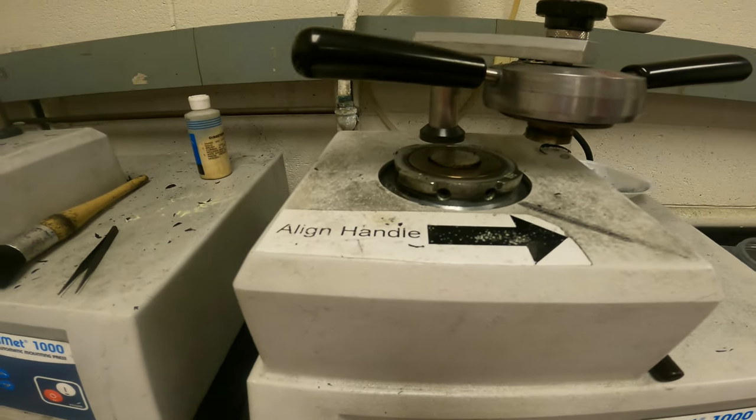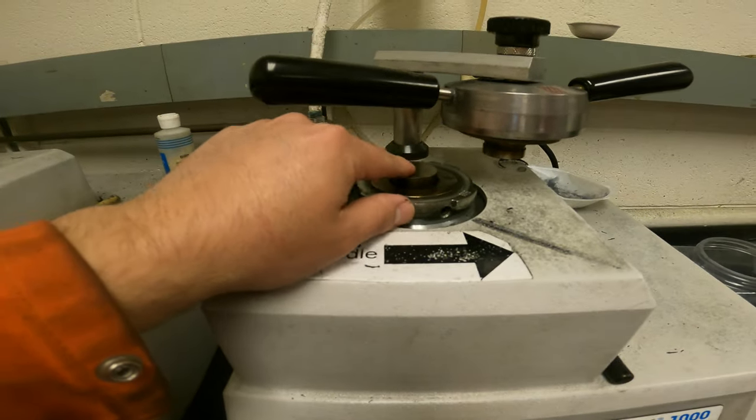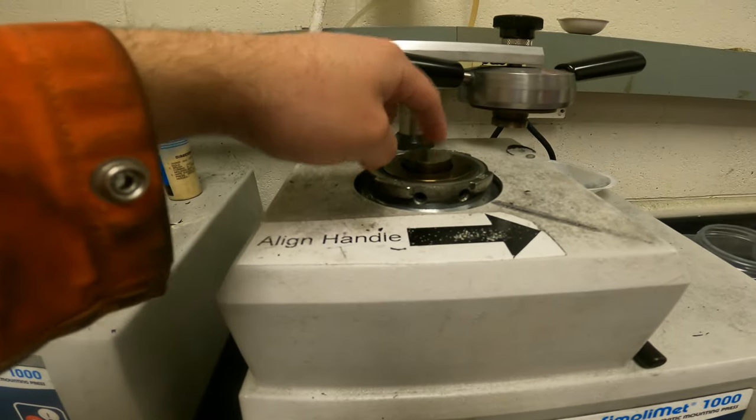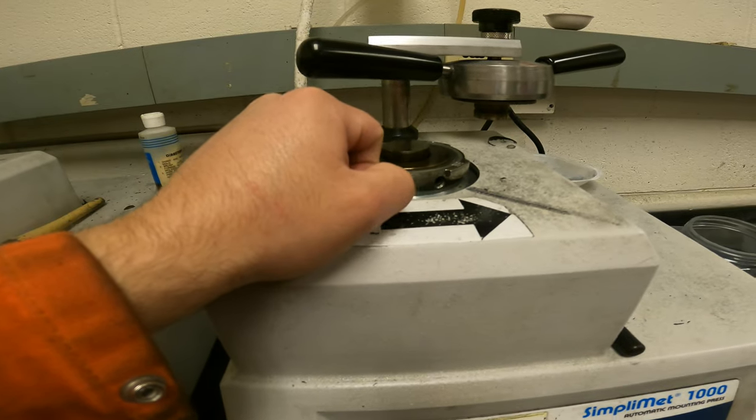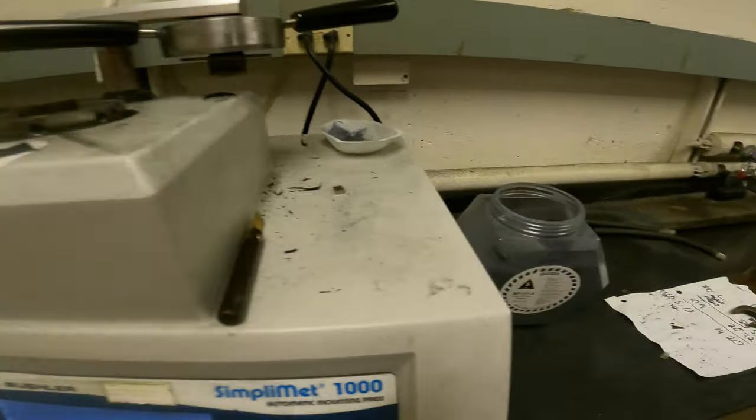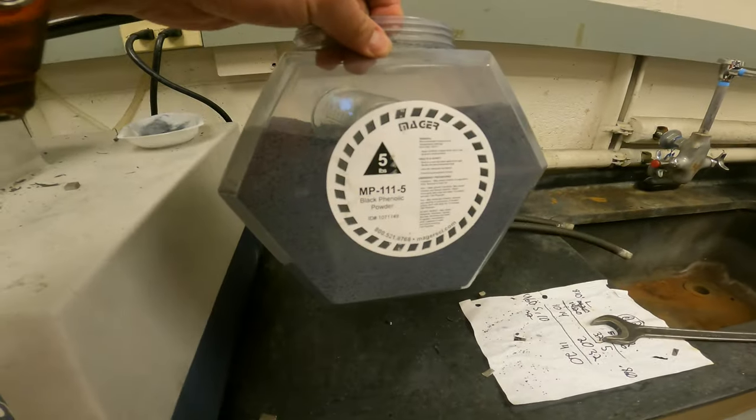So in this station is where we're going to place our sample. Obviously, the face that we want to polish needs to be down, touching the base metal here. And we're going to use these powders, which are the regular bakelite.